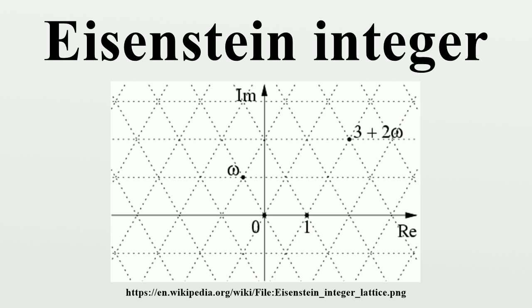the norm of an Eisenstein integer is just the square of its modulus and is given by. Thus, the norm of an Eisenstein integer is always an ordinary integer.